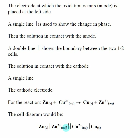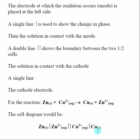After the single line, you write down the solution that is in contact with the anode. In this case it is Zn²⁺ — sometimes they might write the concentration of Zn²⁺ in there. That completes one half cell. Then a double line shows that we are switching to the other half cell, and then it's a mirror image: the solution that the cathode is in contact with comes next.